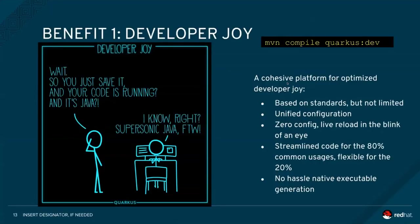One of the things Quarkus can do is take your application and build a native executable. These native applications do not require a JVM to run, like traditional Java applications do — they can run standalone. They require basically two libraries and can run on any currently supported operating system, which is Mac and Linux, with Windows support coming soon.